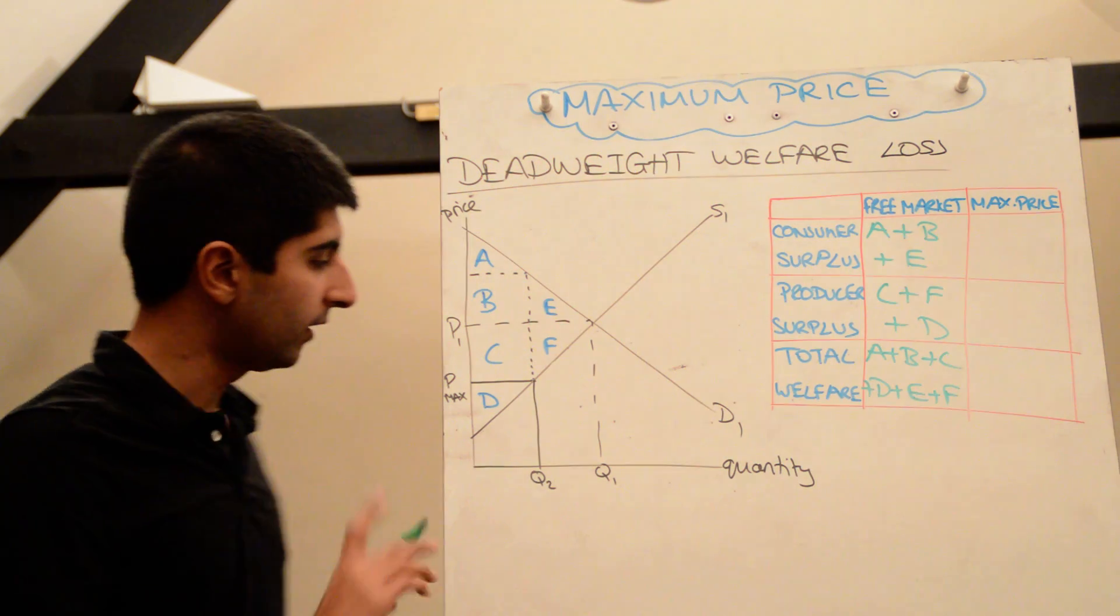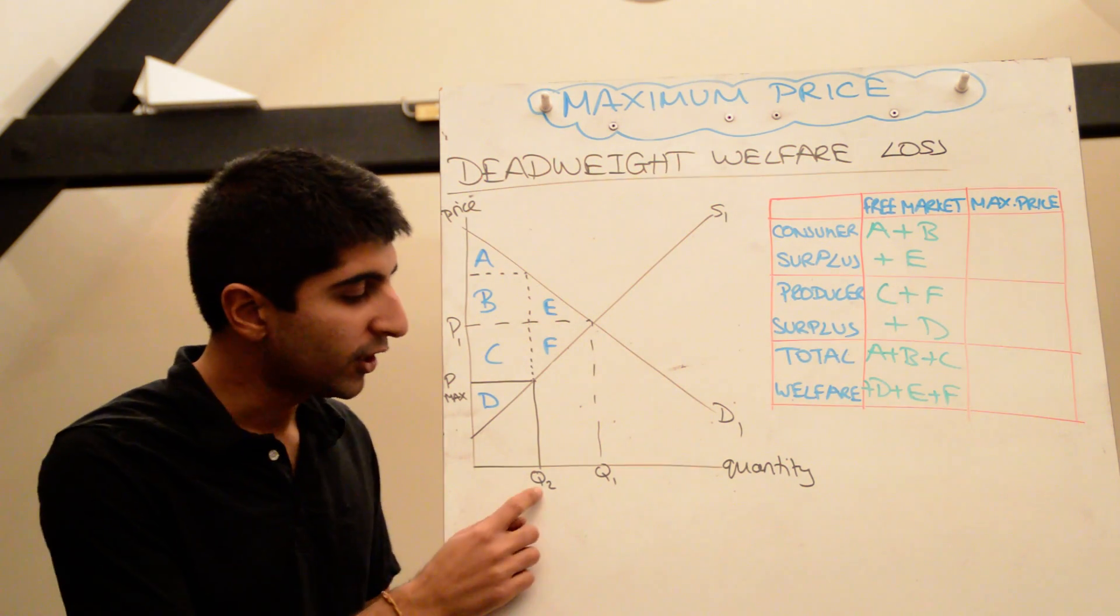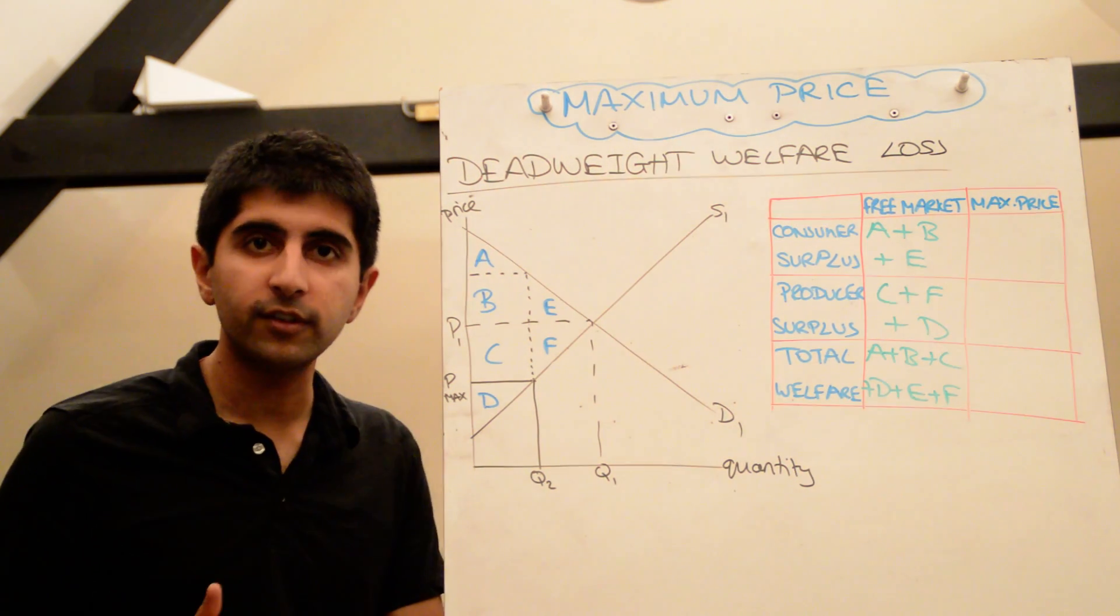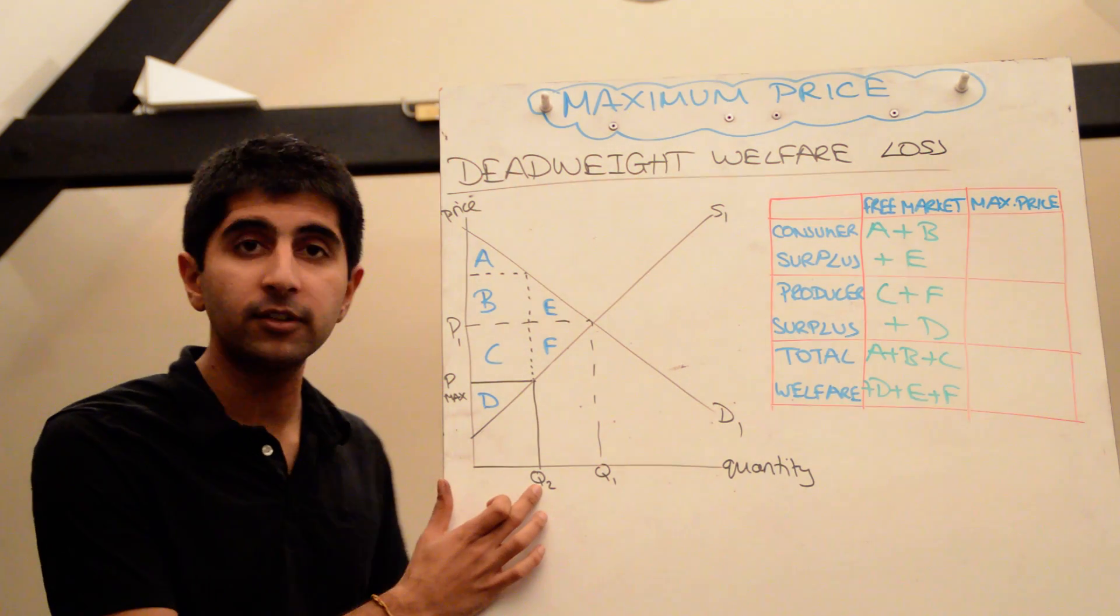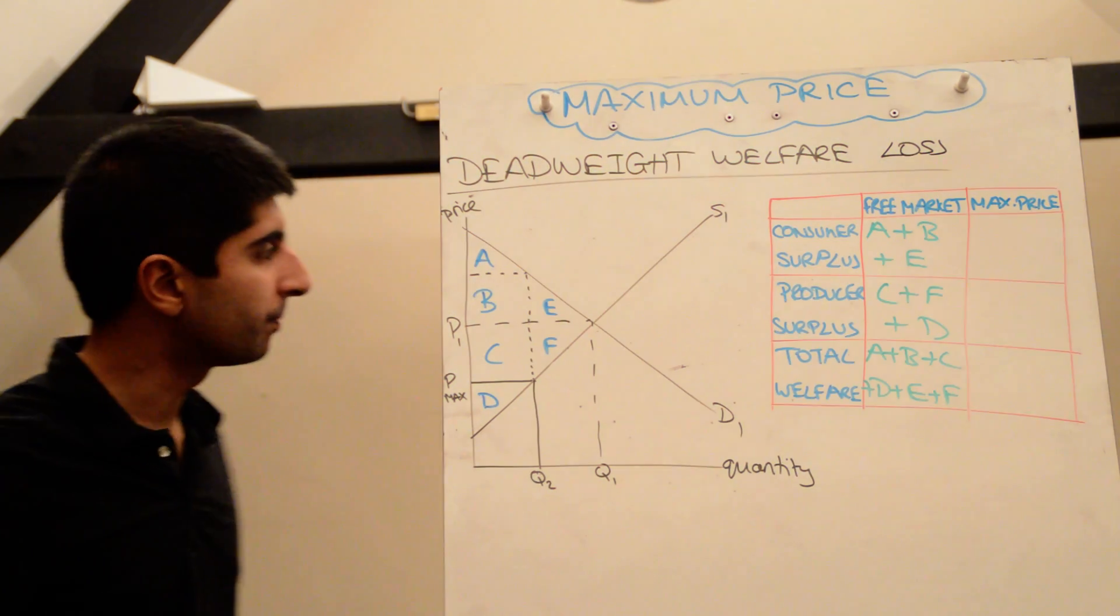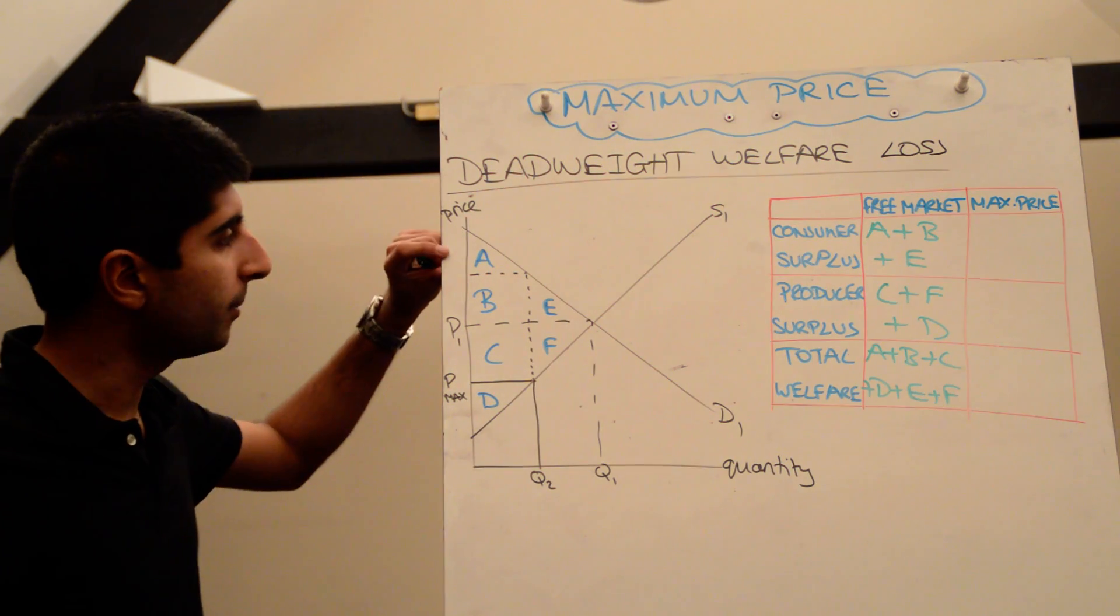Now with a maximum price set at P max, let's isolate the effect on surpluses. Remember, Q2 is the quantity we're focusing on, because Q2 is what's produced and sold. So all surpluses now must be referred back to Q2. At price P max, what's the consumer surplus? Well, the consumer surplus now,